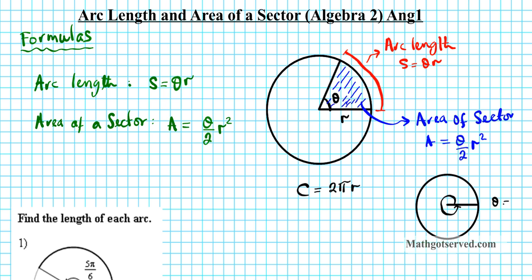Your theta is going to be 2 pi, or 360 degrees, but we are working with radians so we are going to use 2 pi. Let's say your radius r is r. If I plug these two values into the arc length formula, I'll have S equals theta times r. With theta as 2 pi and r as r, this is the formula for the circumference of a circle. So the circumference is actually an arc length where the angle theta is 2 pi.